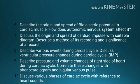Number 6, describe the origin and spread of bioelectric potential in cardiac muscle; how does the autonomic nervous system affect it? Number 7, discuss the origin and spread of cardiac impulse with a suitable diagram; describe a method of its recording and significance. Number 8, describe various events during the cardiac cycle; discuss ventricular pressure changes during the cardiac cycle.